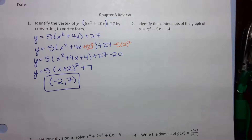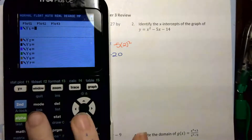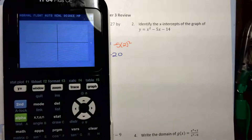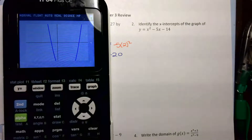Number 2 wants me to find the x-intercepts of the graph. It doesn't tell me how to do it, so I am going to choose to graph this. I am going to type this into my calculator — I have x squared minus 5x minus 14. If I graph this, it comes out looking like this, so I just want to figure out where it's crossing the x-axis.